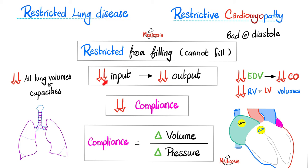The preload, the end-diastolic volume. Less input equals less output. Does this affect the right ventricle or the left ventricle? How about both?